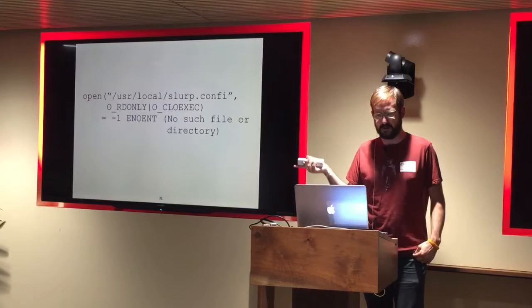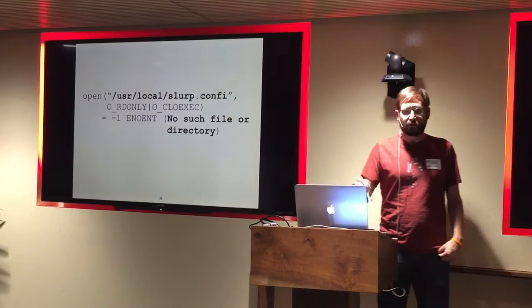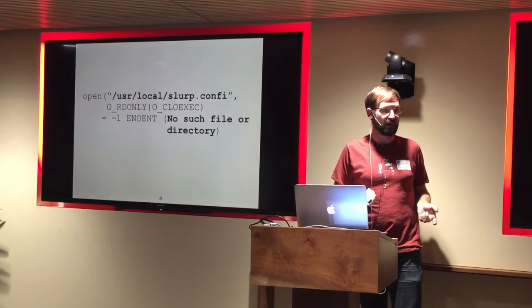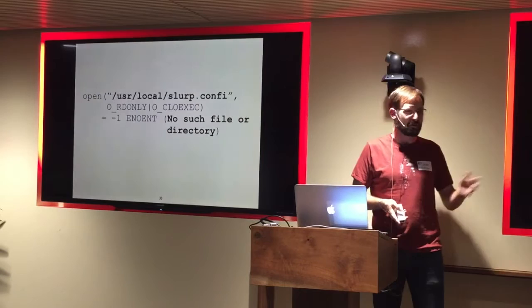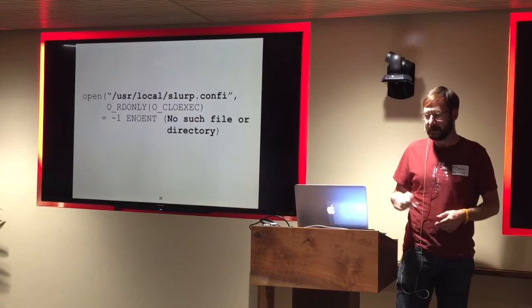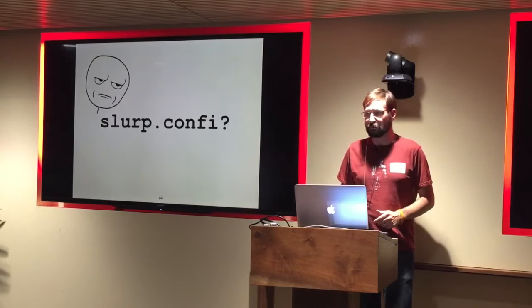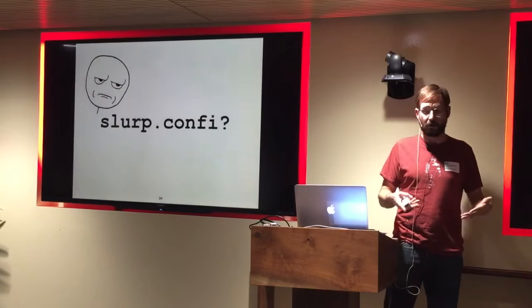Scanning through and looking for things that look familiar or interesting, we happen upon this line. The 'open' command is trying to open a file — '/usr/local/slurp.conf' — and it's returning an error. Strace does some smart stuff with well-known syscalls and tells us this means there was no such file or directory. This set off a light bulb — people remembered Carl talking about some configuration setup that was obviously missing on the new computer, and apparently this was the file we were looking for.